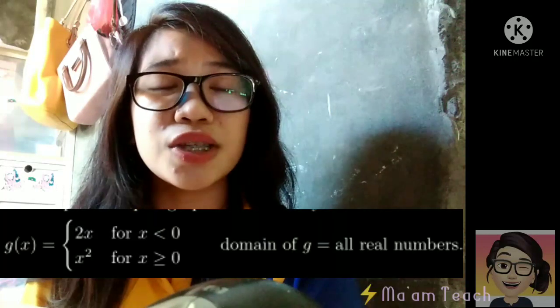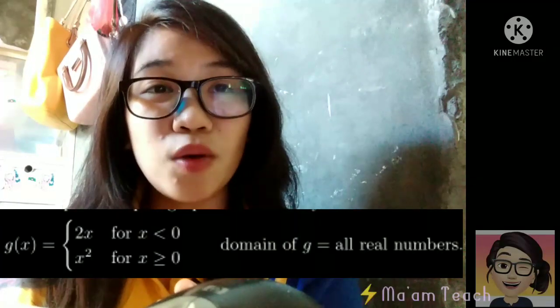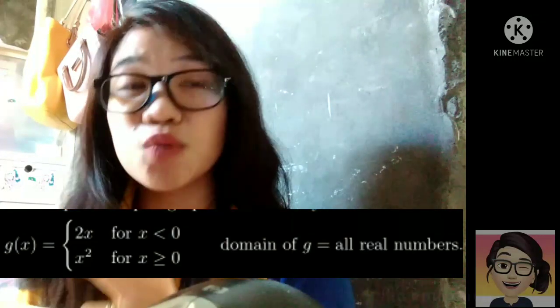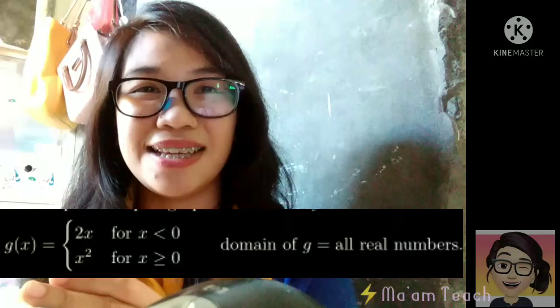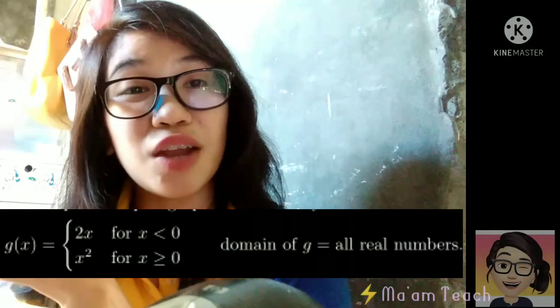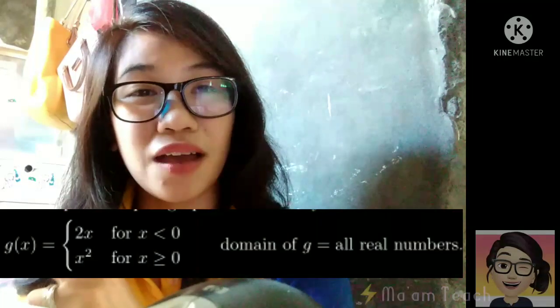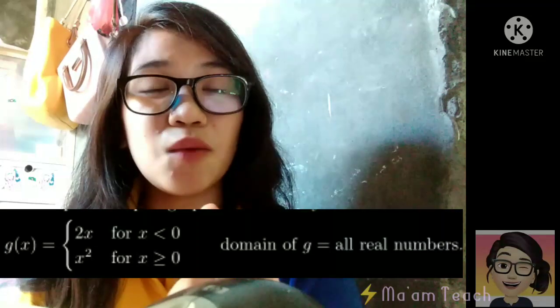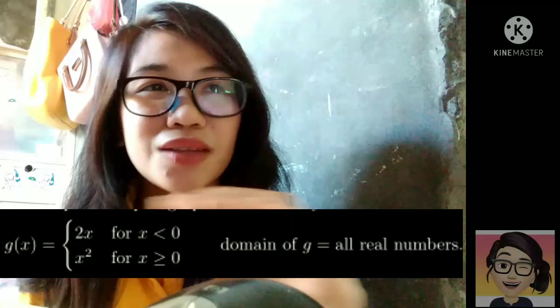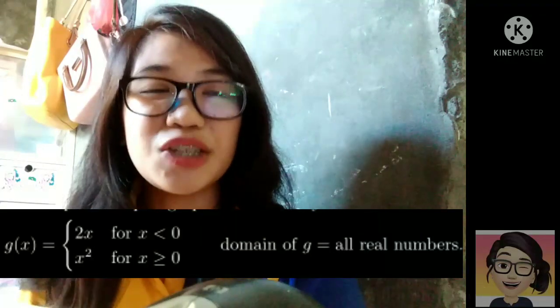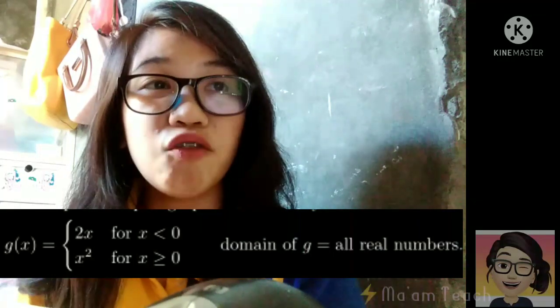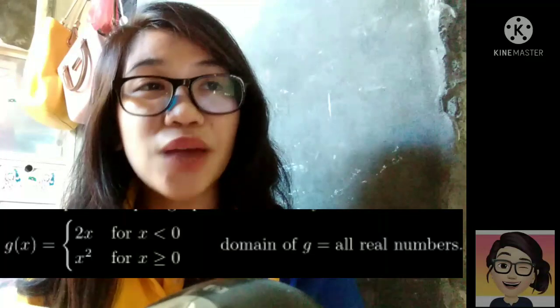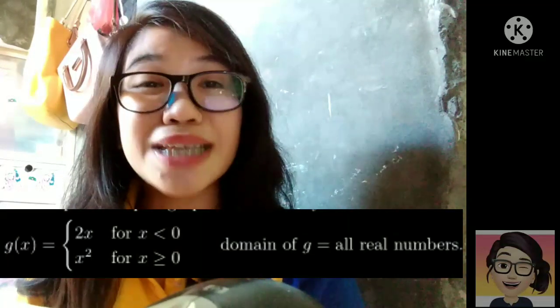So lahat ng negative numbers, yun yung gagamitin mo at isasubstitute mo dito sa 2x in order for you to solve for the value of g of x. Now, mayroon pang another rule, yung pangalawa, sa second row. G of x is equal to x squared for x is greater or equal to 0.